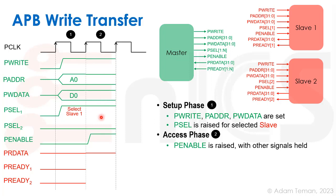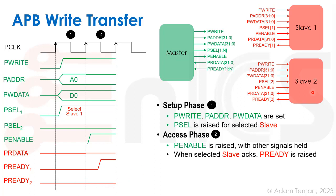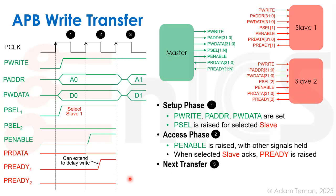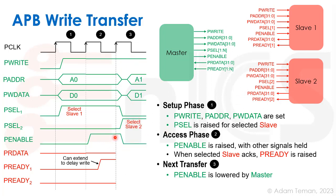Other signals remain stable during the access phase. Once the slave completes the operation, it raises PREADY as its ACK, indicating it's done. Since this is a write, PRDATA is not driven. To extend the transfer, PREADY can be held low until the slave is ready to ACK. Once PREADY goes high, the master can initiate a second transaction — changing address, data, and PSEL for a different slave — and must bring PENABLE low since it only goes high during the access phase.